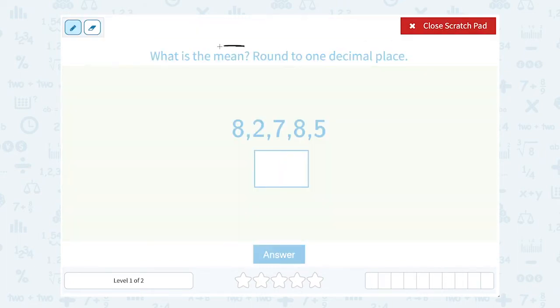Well, that vocabulary word mean is another word for the average. So to find the mean or the average of a set of numbers, you add them all together and divide by how many numbers you have.